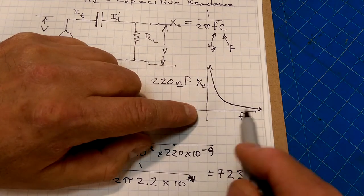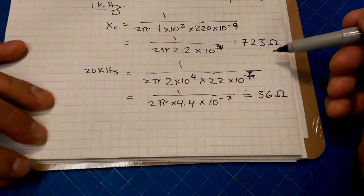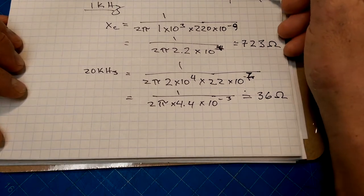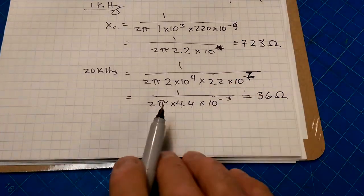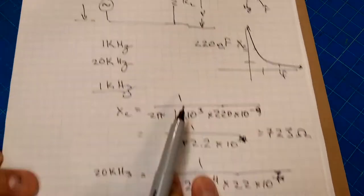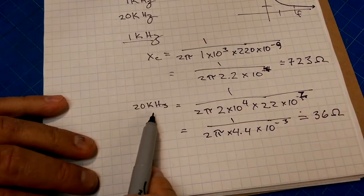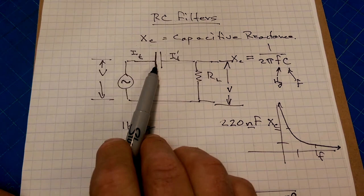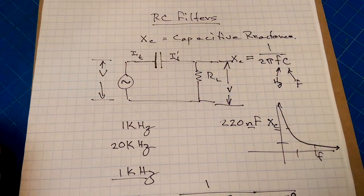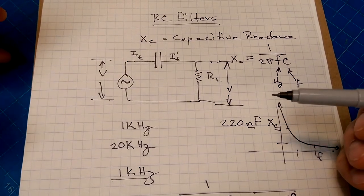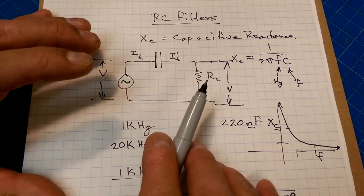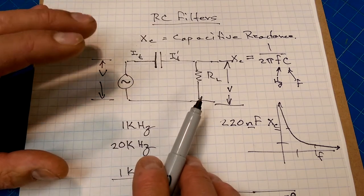So as our frequency gets high, our capacitive reactance gets much lower. Notice that sort of bears out here. When our frequency was here, we had some high capacitive reactance, and when our frequency was over here, we had a lower capacitive reactance. And as this number gets larger, this entire number will get smaller until it approaches zero. So at high frequencies, much larger than 20 kHz, this capacitor will end up being effectively a short circuit. And that's why we say that capacitors have a short circuit for high frequencies.